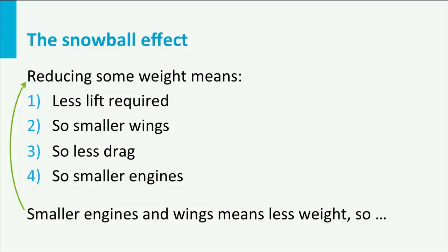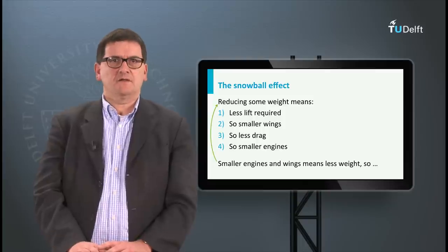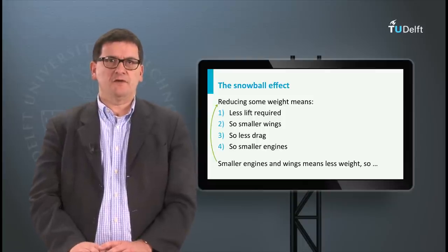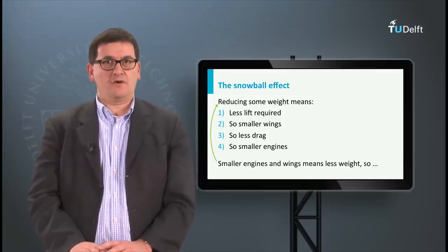Assume the mass of an aircraft can be reduced by 500 kilos. That means less lift is required, so a smaller wing is needed. A smaller wing also implies that the drag will be smaller and a less powerful engine is required. The smaller wing and engine result in further weight reductions, which trigger a new loop in this cycle. Note that although the size of wings and engines will not change gradually, an initial weight saving usually results in an extra weight saving of the same order of magnitude.